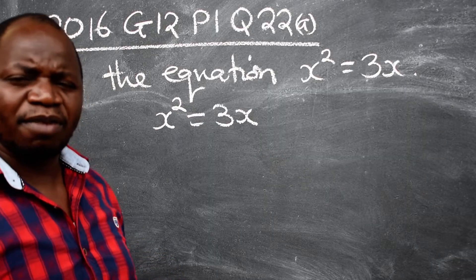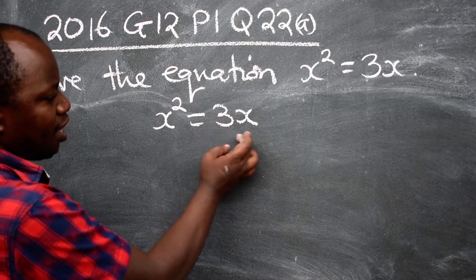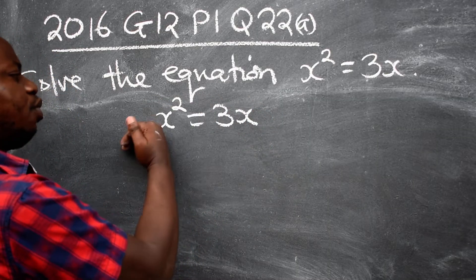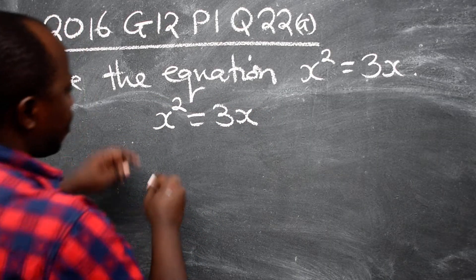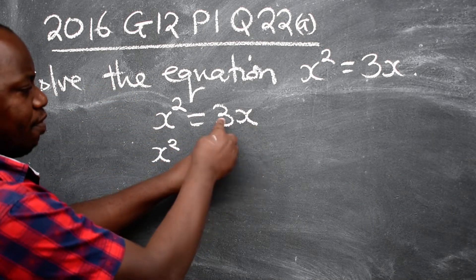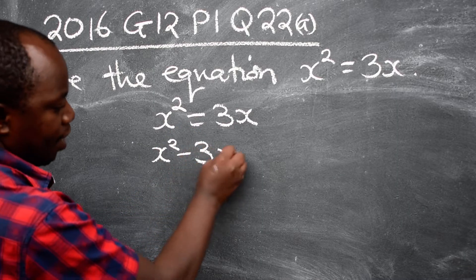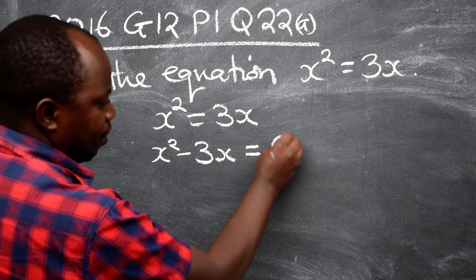So the first step, what you are going to do here is to shift the 3x which is on the right hand side which will come on the left hand side. So you are going to have x². This is positive 3x. So when it crosses the equal sign, it becomes negative 3x is equal to 0. This side, you are going to remain with a 0.